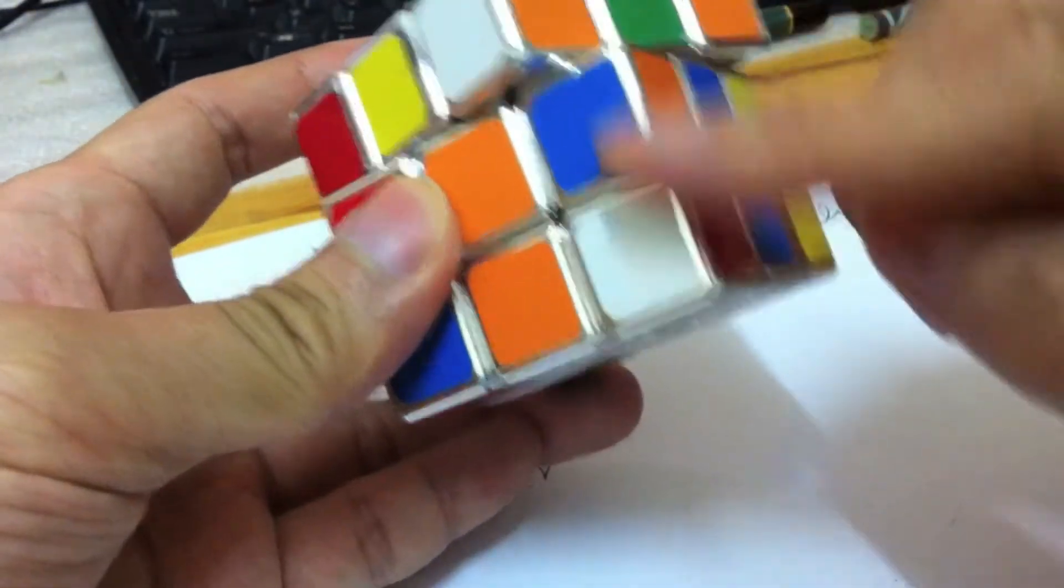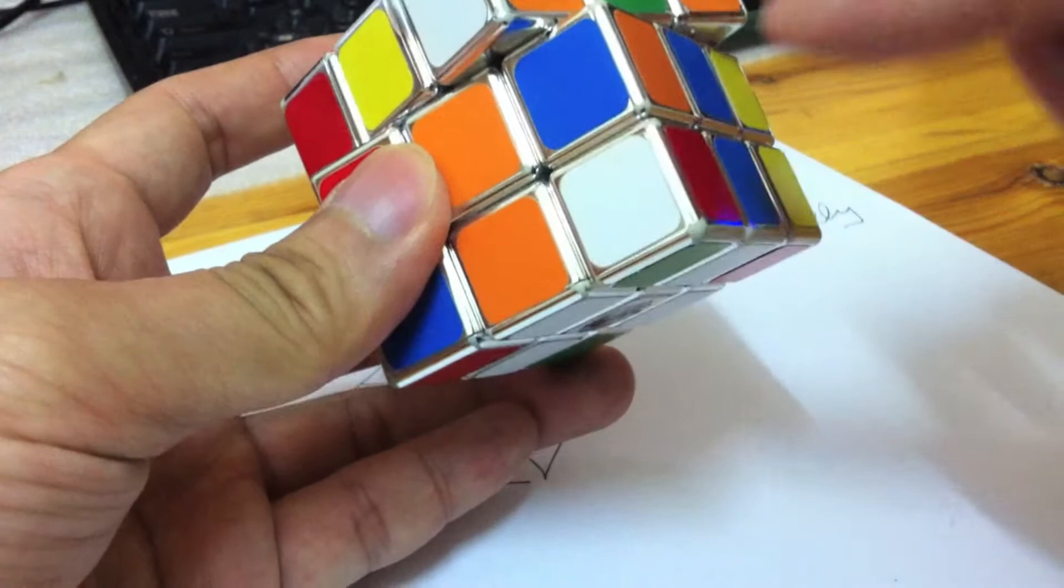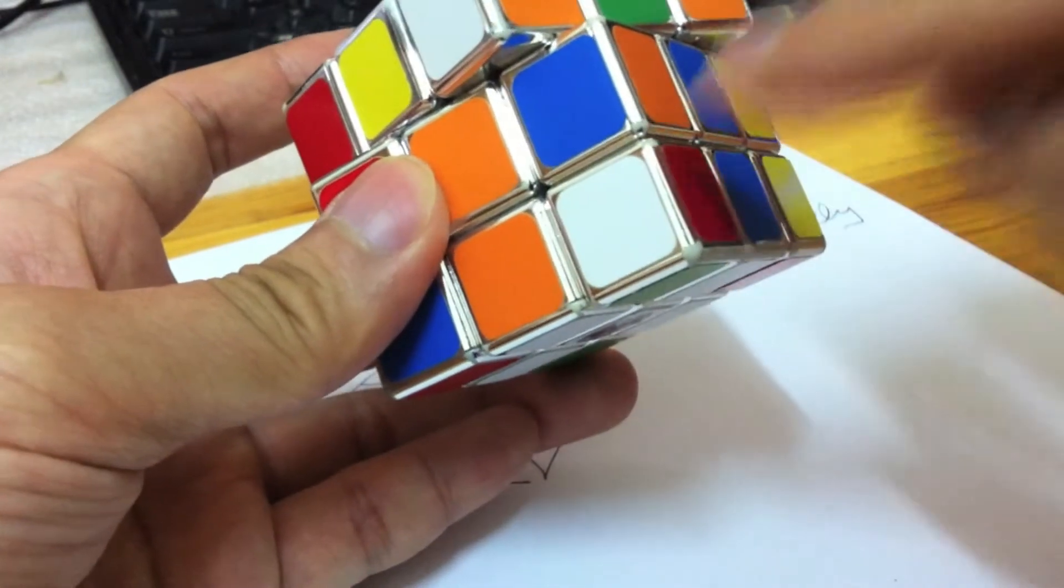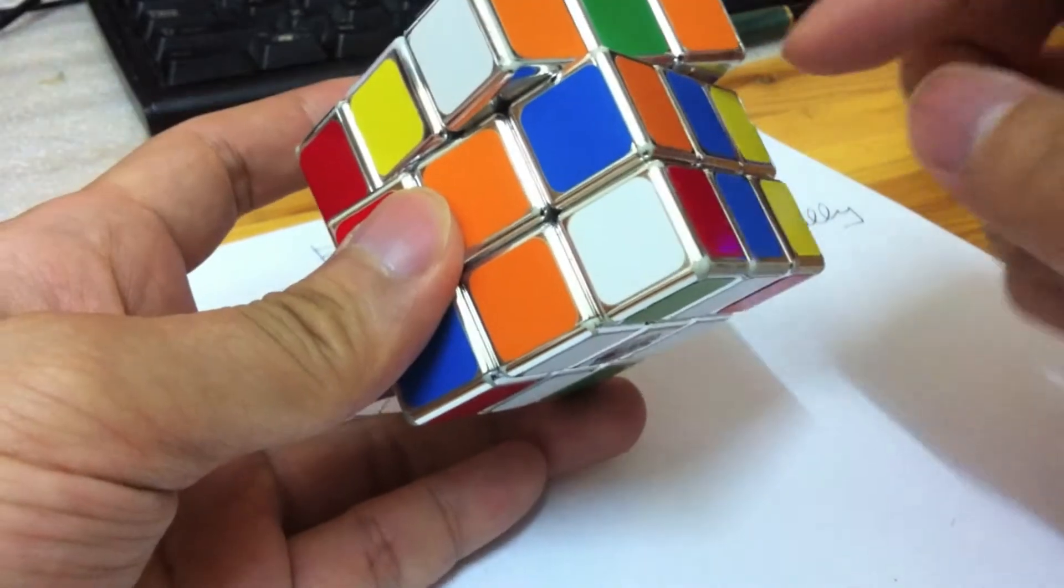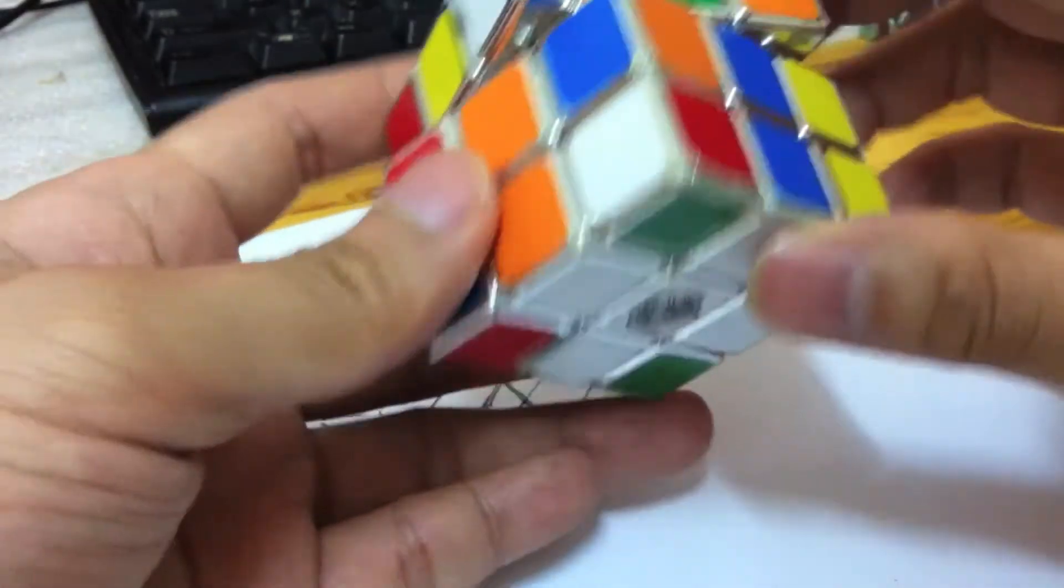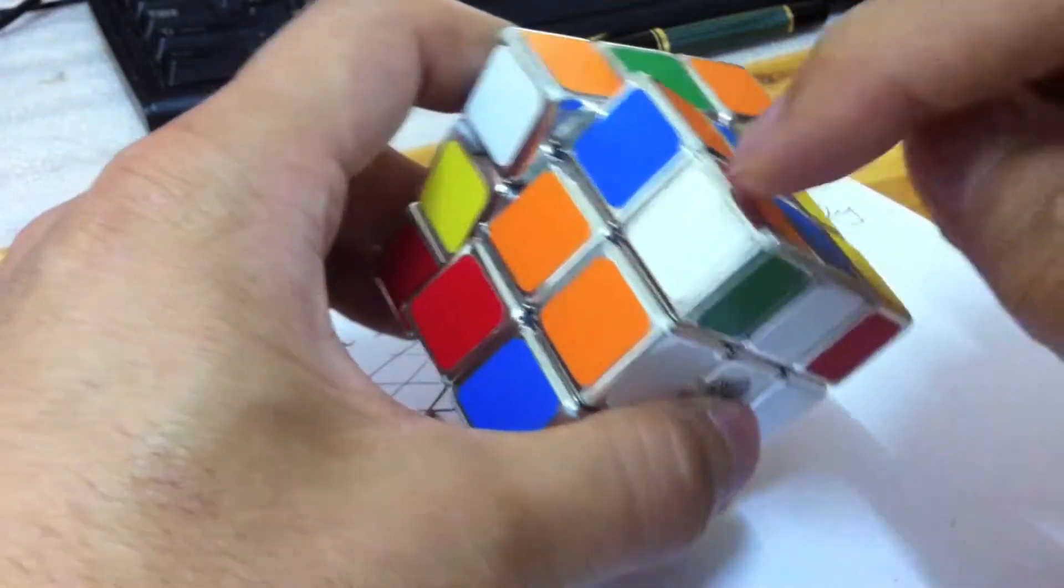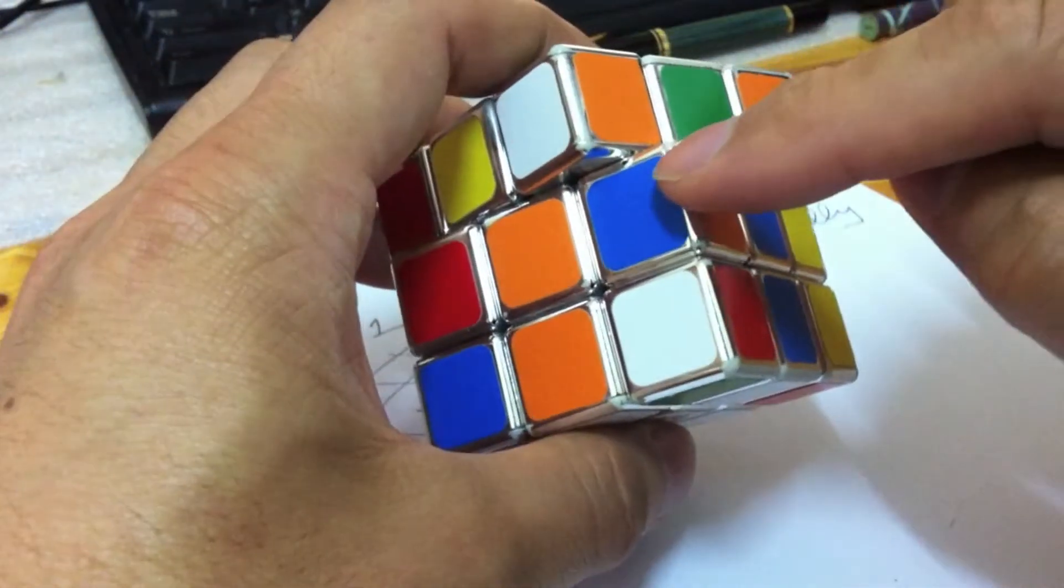The four columns to fill in by correct pieces with correct colors and correct orientations. Each column consists of two pieces: the corner and the edge.